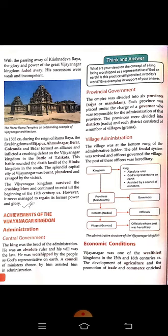Central government: The king was the head of the administration, like at present we have the president and the prime minister. He was an absolute ruler — that means he had total control, all the powers were in his hand. His will was the law, whatever he desired became the law. He was worshipped by the people as God's representative on earth. A council of ministers chosen by him assisted him in administration.